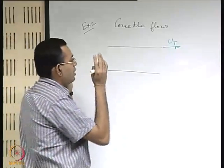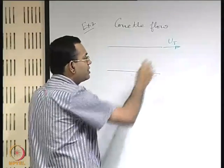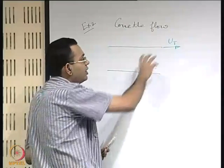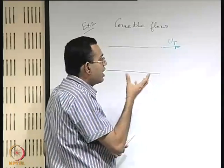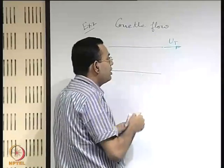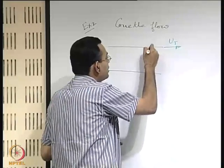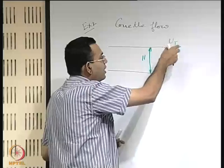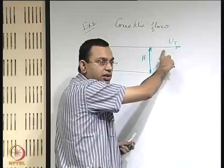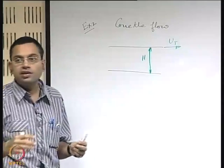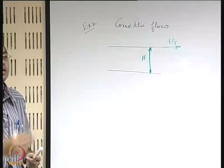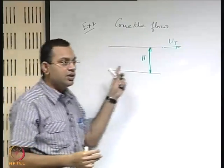If you forget the effect of the pressure gradient and just consider the relative velocity, what it creates in the fluid is a velocity gradient. The bottom plate has zero velocity, the top plate has velocity u_t, and the gap between the two plates is h. Then roughly u_t / h is the velocity gradient — the rate of deformation created by the boundary condition itself.